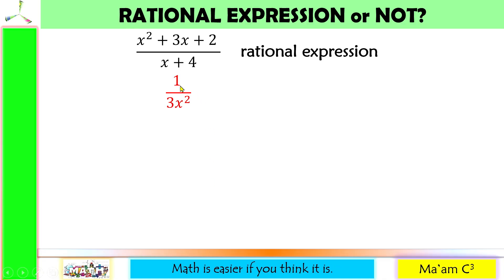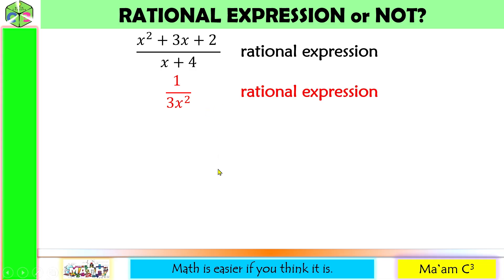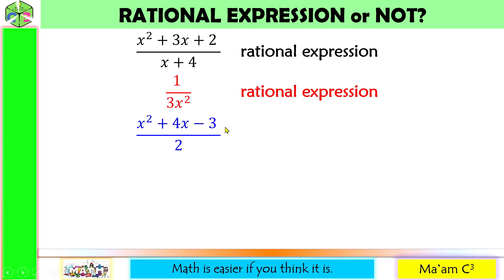Another one — is this a polynomial? Yes, it is. How about this one? Yes. So again, a polynomial divided by a polynomial is a rational expression. Another one: x squared plus 4x minus 3 — is this a polynomial? Yes, it is. How about 2 in the denominator? Yes, this is also a polynomial. A polynomial divided by a polynomial, so this is a rational expression.